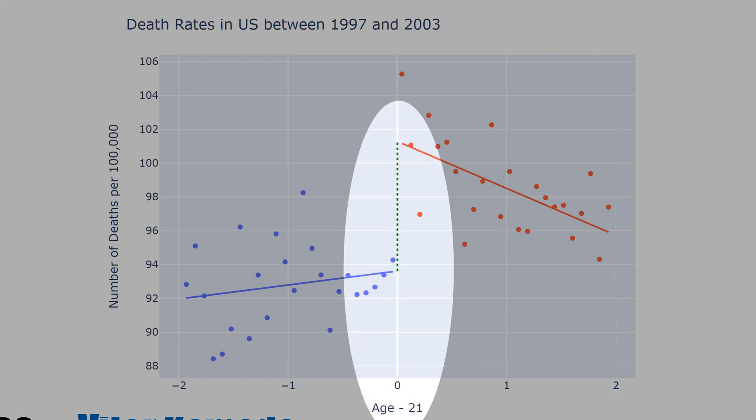What you see in the chart is that Americans are more likely to die when they complete exactly 21 years old. See that just few months or few days after 21, the mortality rate starts to decrease.